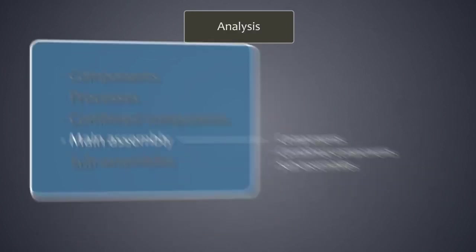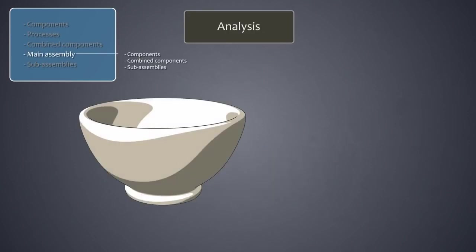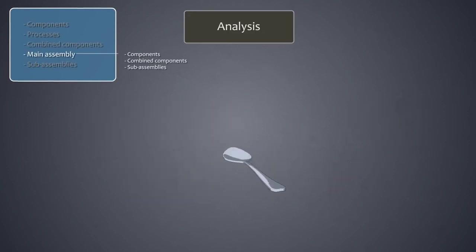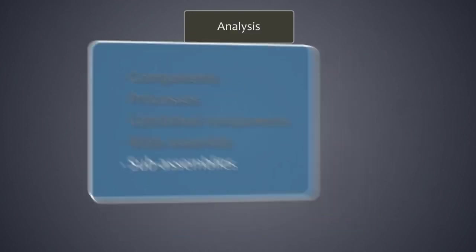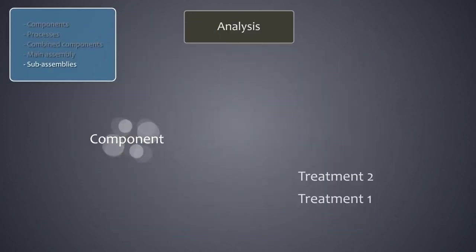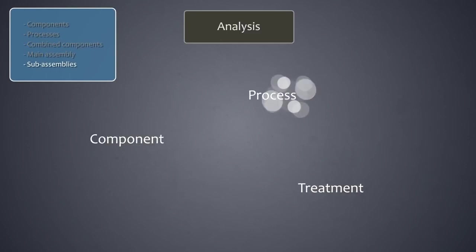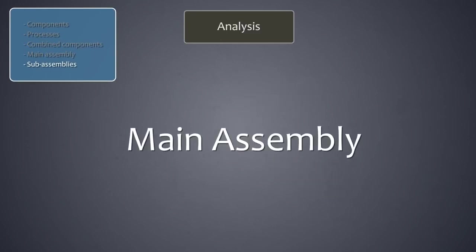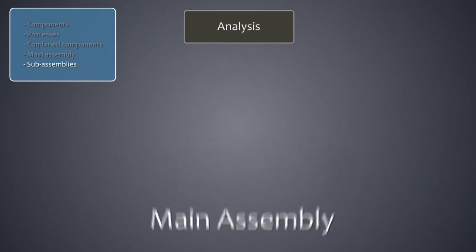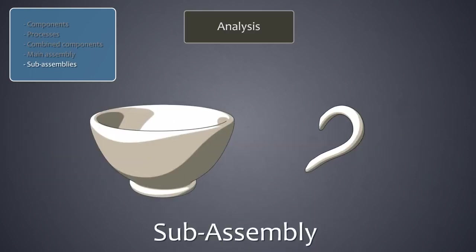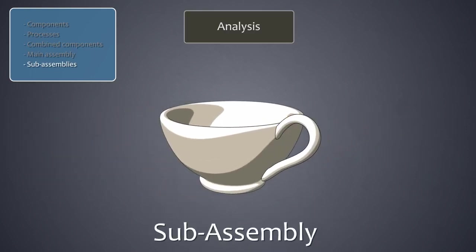In our case, this would include the saucer, the cup with its ear, and the spoon. A sub-assembly is a combination of two or more components, treatments, or processes which must first be assembled before they can be incorporated into the main assembly or another sub-assembly. In our example, the cup and its ear together form a sub-assembly.